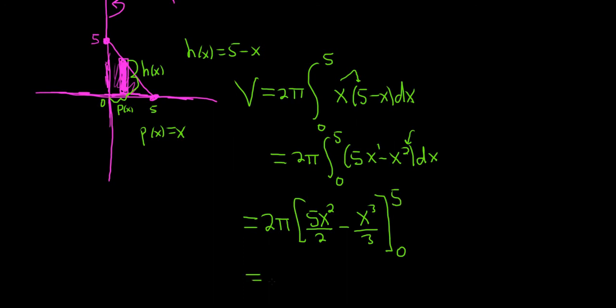This is equal to, I'll leave the 2 pi on the outside. First you plug in the 5, so you get 5 times 5 squared over 2 minus 5 cubed over 3. Then you're supposed to subtract, and then plug in 0, but the good news is, when you plug in 0, everything goes away.